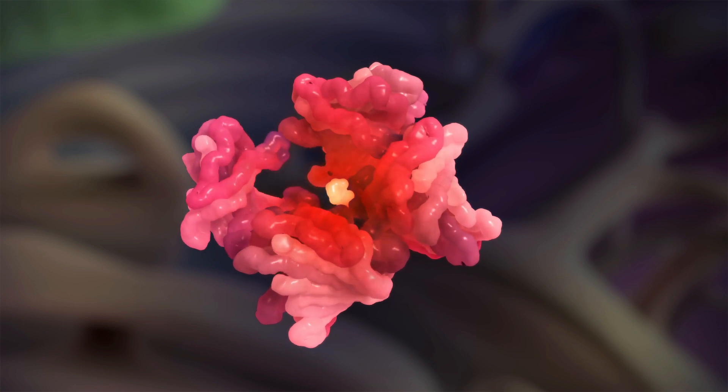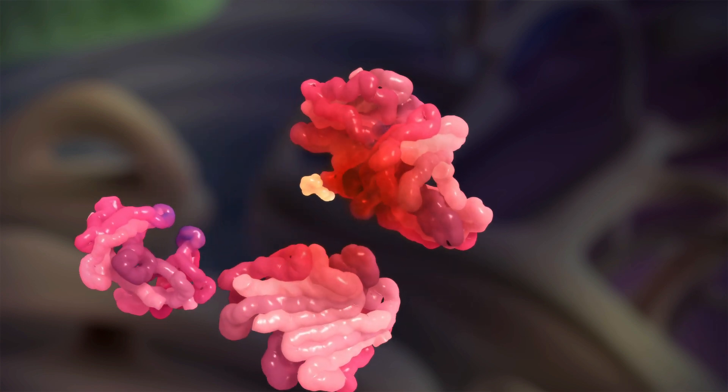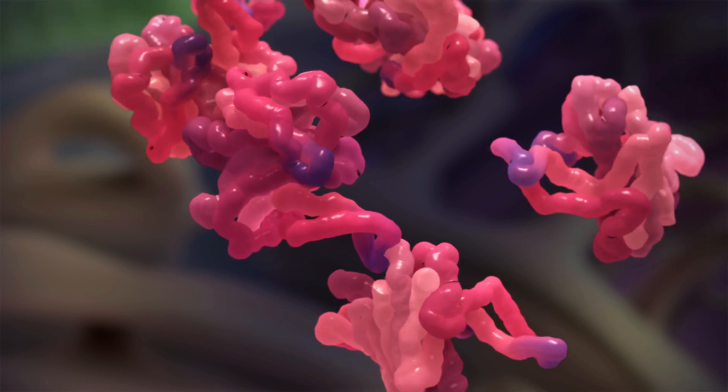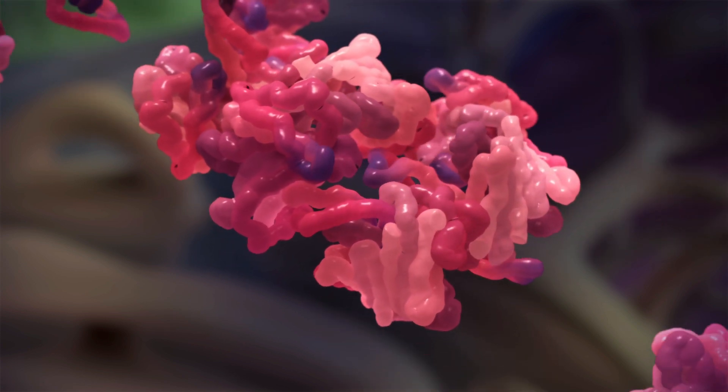This type is generally referred to as wild-type ATTR amyloidosis. Once apart, the TTR proteins have a tendency to misfold and aggregate to form fibrils, which deposit as amyloid.